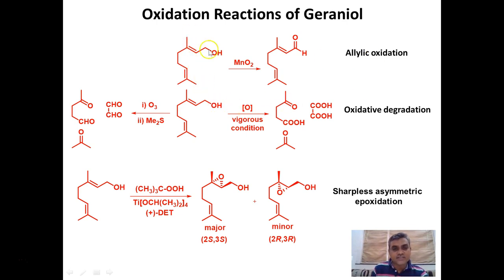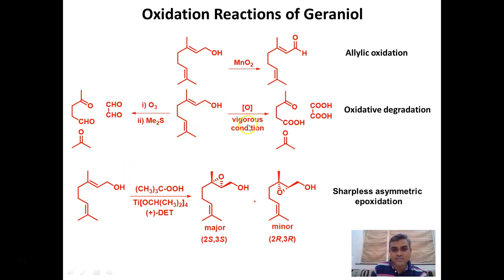Geraniol is an allylic alcohol containing two double bonds and it undergoes very interesting oxidation reactions. The first is a specific allylic oxidation using MnO2 as the preferred reagent. The allylic alcohol undergoes oxidation to give the alpha-beta unsaturated aldehyde — that is the citral molecule. Similarly, carbon-carbon bond cleavage, i.e., oxidative degradation of geraniol, can be accomplished using strong oxidants like KMnO4 or by ozonolysis.